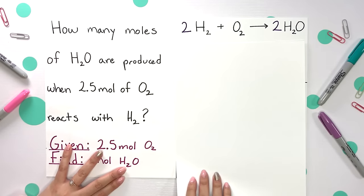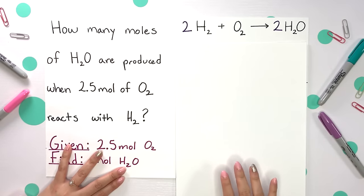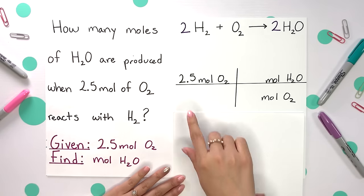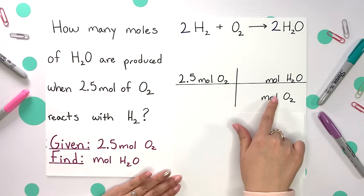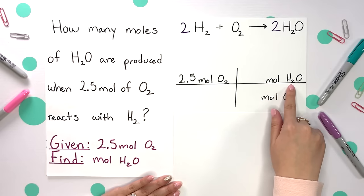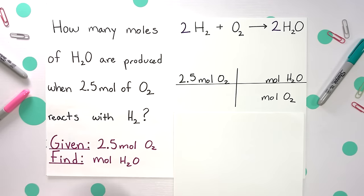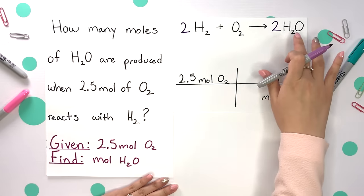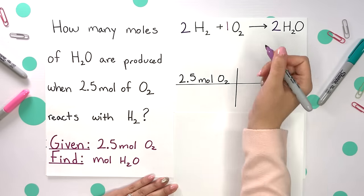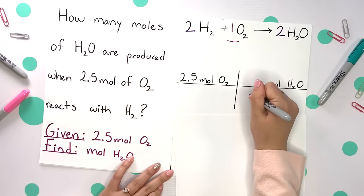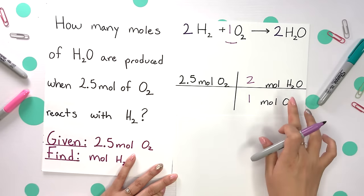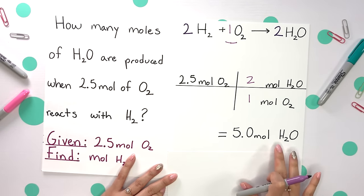Where we get that mole ratio is from our balanced equation. Your setup will be with our given first, that 2.5 moles of O2 on top, aligning your moles of O2 across from each other so they can cancel, and put what you're finding, the moles of H2O, on top. Where we're going to take these numbers for our mole ratio is from the balanced equation. If there is no original number, assume it's just a 1. There's 1 mole and 2 moles of H2O. Multiply straight across and you get 5.0 moles of H2O.